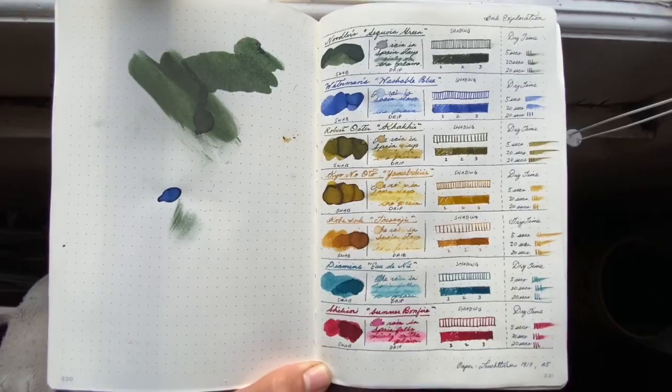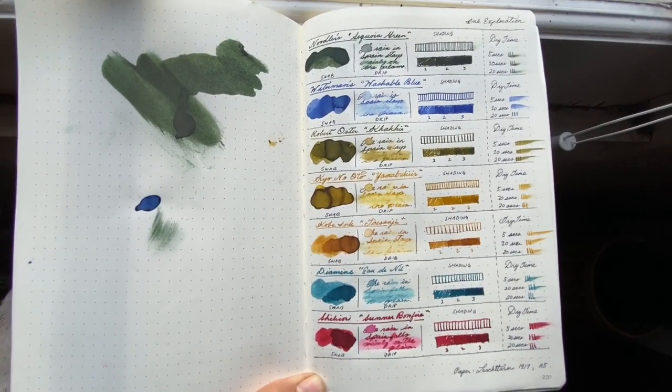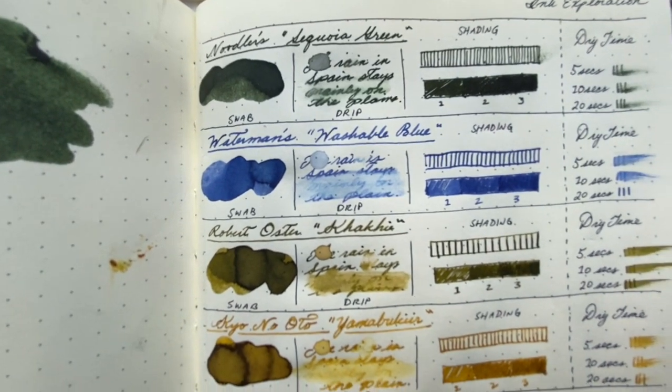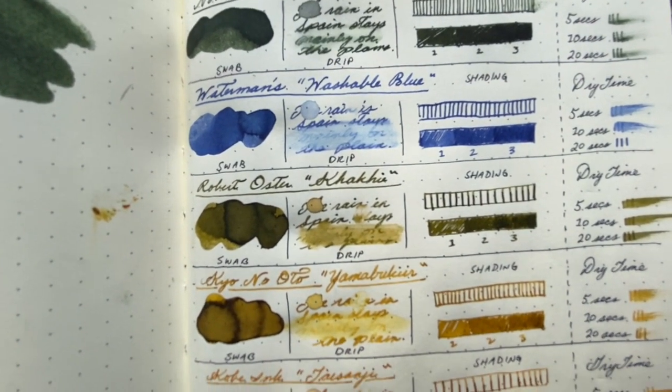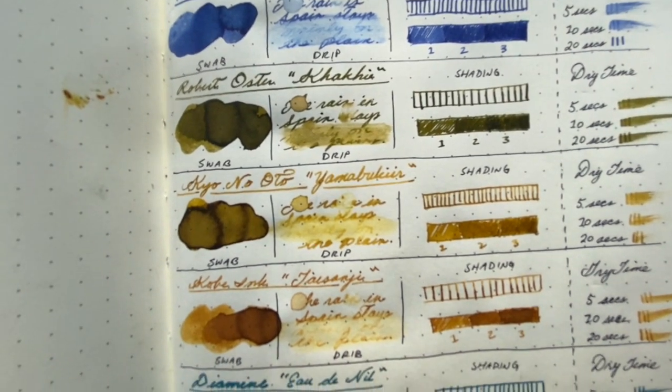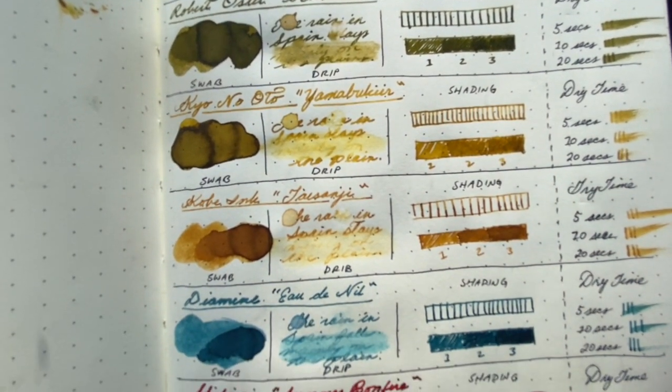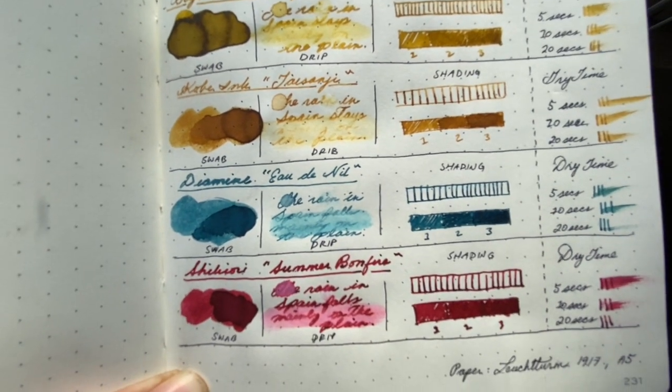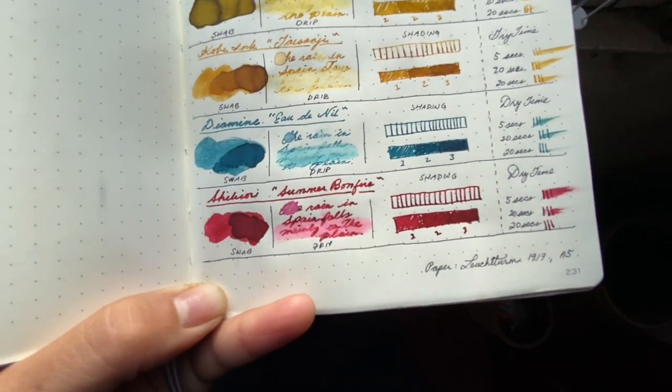The Shiki-ori ink has a lot of sheening and some shading, but also it feathered just a tiny bit. Again, I apologize for how all over the place and unorganized this video turned out to be, but if you do have any more questions please just ask me in the comments. I'd be happy to answer and I hope that you still enjoyed this. Thanks for being here.